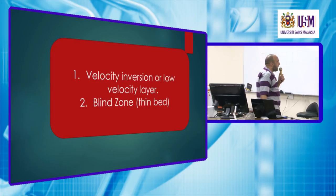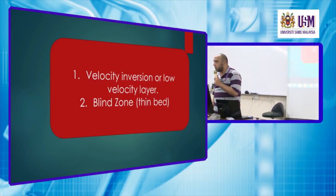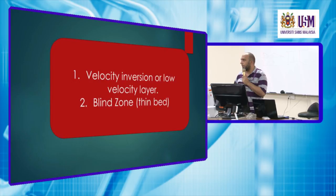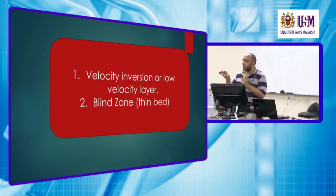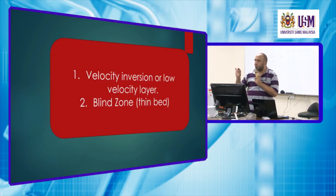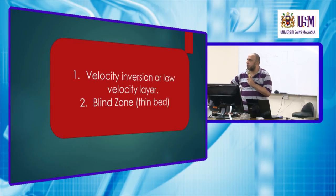The other problem is called the blind zone, or the thin bed, as we discussed before. We have the Fresnel zone, which states that for any object or structure to be identified in the seismic method, the dimension of this layer or object should be at least one-fourth of the wavelength. So if the layer thickness is less than one-fourth of the wavelength, it will not be detected in our seismic refraction method.